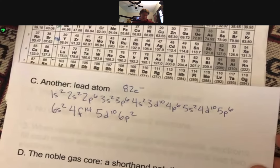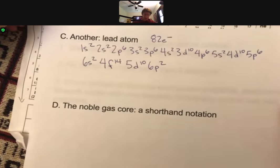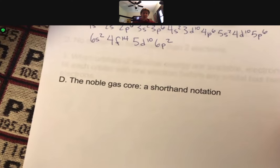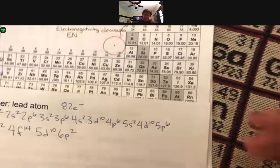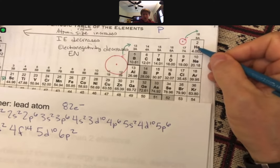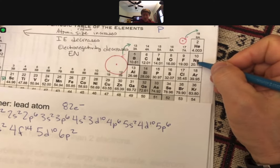But wouldn't it be great if there was a shortcut? And the shortcut is called the noble gas core. You can use a noble gas core for any of the noble gases, although I don't usually do it for helium. I usually start on neon.